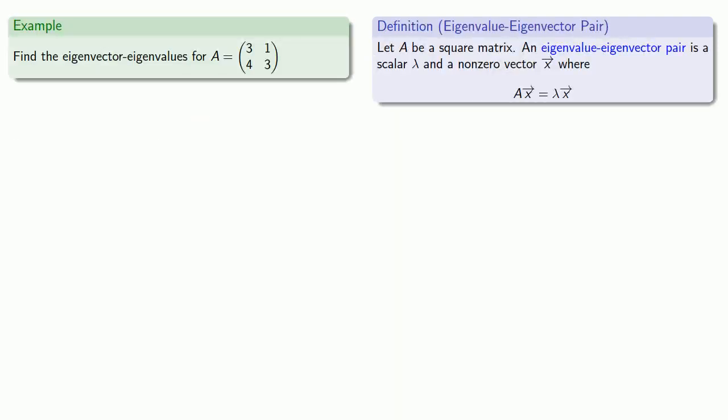So here's a crash course on finding eigenvalues and eigenvectors. Suppose I have the square matrix 3, 1, 4, 3, and I want to find the eigenvalue-eigenvector pairs.